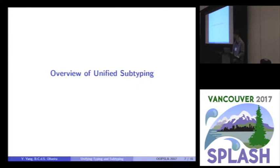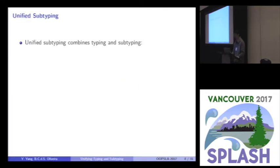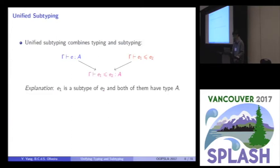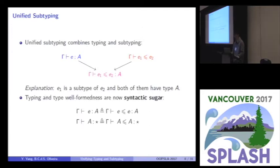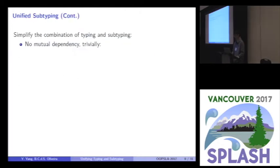So, next part is an overview of this idea. Unified subtyping combines typing and subtyping in this way. You can see this form of this relation here. The explanation goes like this. This E1 is a subtype of E2. And both of them have the same type A here. By using this definition, we can treat the original typing and another relation, type well-formedness, as syntactic sugar of this new one. As long as we set these two expressions E1 and E2 to be the same E here, and similar for the type well-formedness.